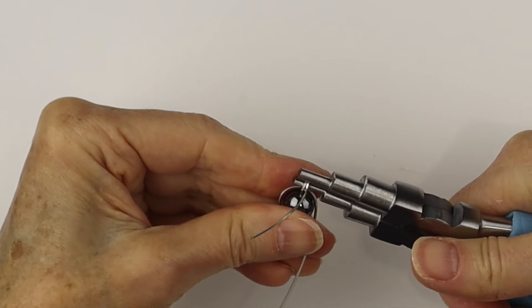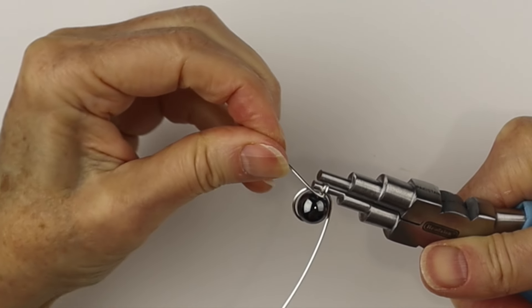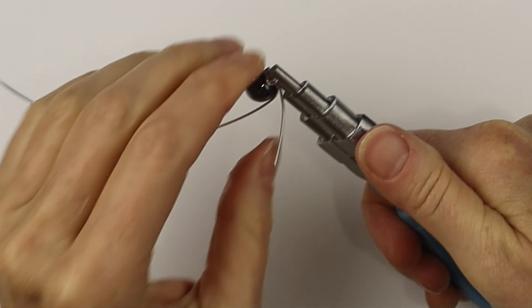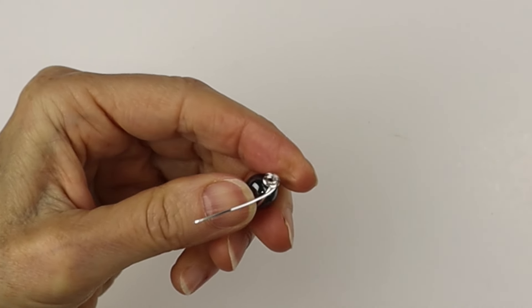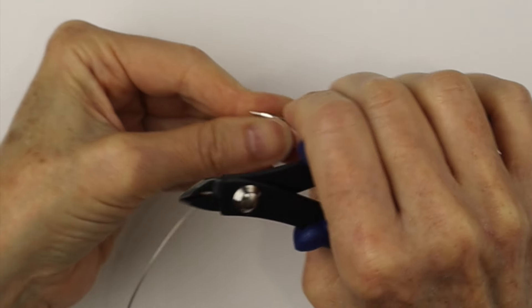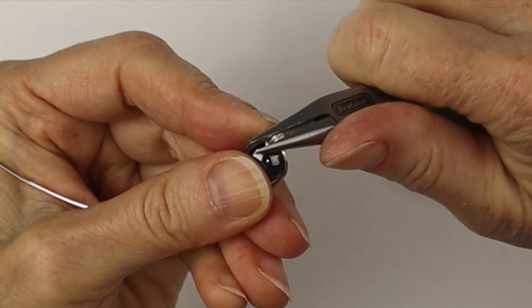Then bring the wire around to the back while holding the loop with the pliers. So remove the pliers and clip that end with the nipper tool, and then just use your flat nose pliers or the chain nose pliers just to push in that end.